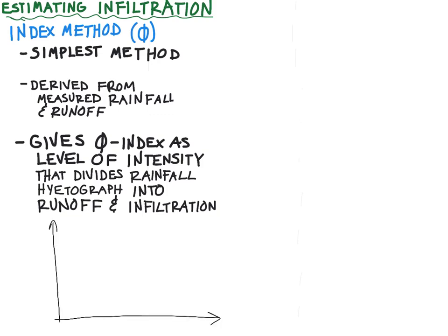What that means is this: if this is an estimate for my hyetograph, meaning rainfall per hour, let's just say it went like this and we had four hours of data.